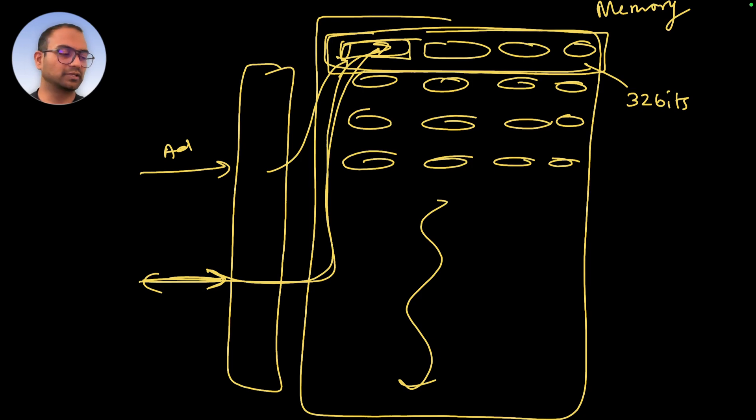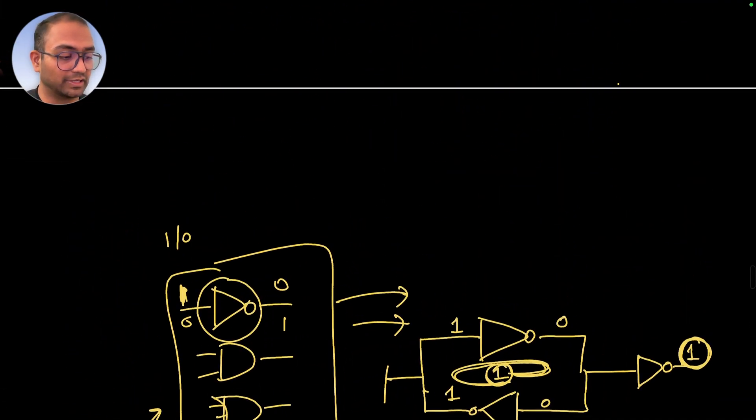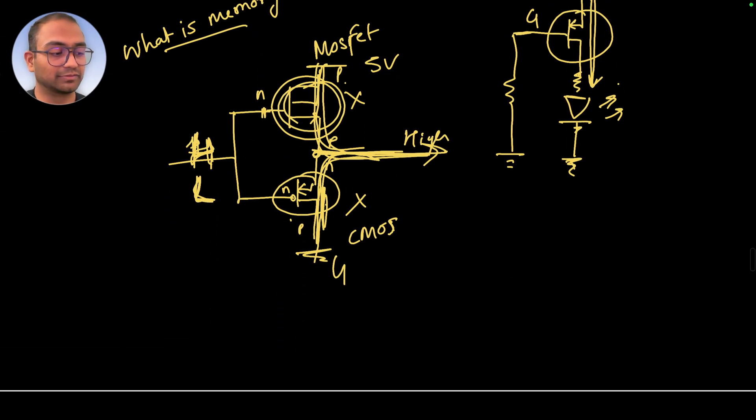One last bit of information: usually when we talk about instructions, instructions span 32 bits in general - not a mandate, but for the kind of machines we are going to work with it would be 32 bits. Usually you'll see program counter would jump from the 0th location to 4th location to 8th location to 12th and so on, and that's the reason.